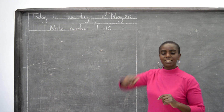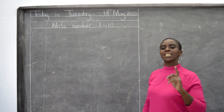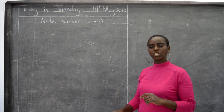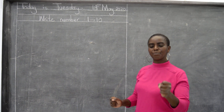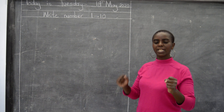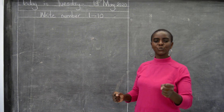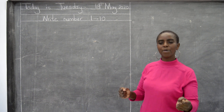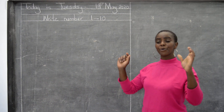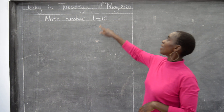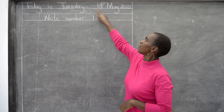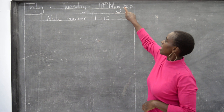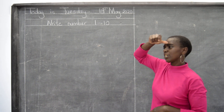Good. How many months make a year? There are 12 months in a year. Starting: January, February, March, April, May, June, July, August, September, October, November, and December. Hooray! So we're in the month of May. And the date of today is 19th May, year 2020.